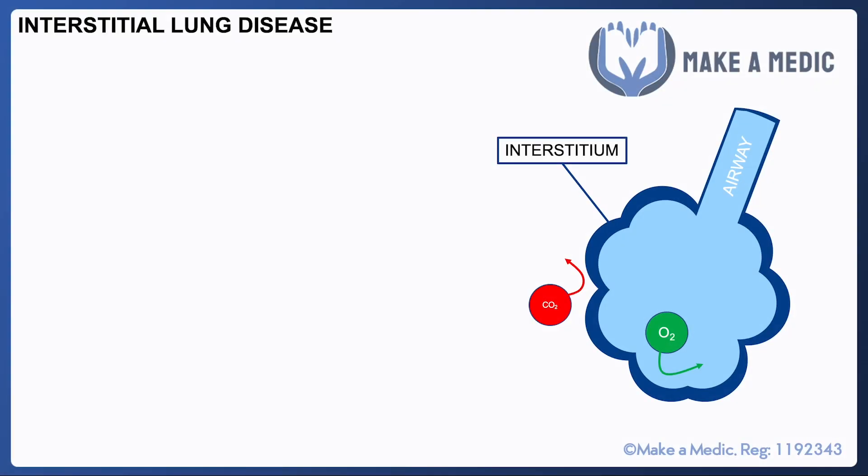Interstitial lung disease is an umbrella term used to describe disorders of the actual tissues of the lung. A lot of the time we focus on airway disorders — the route that air takes in and out of the lungs — and these include things like COPD, bronchiectasis, and asthma. However, interstitial lung disease is actually talking about the lung tissues that these gases pass through.